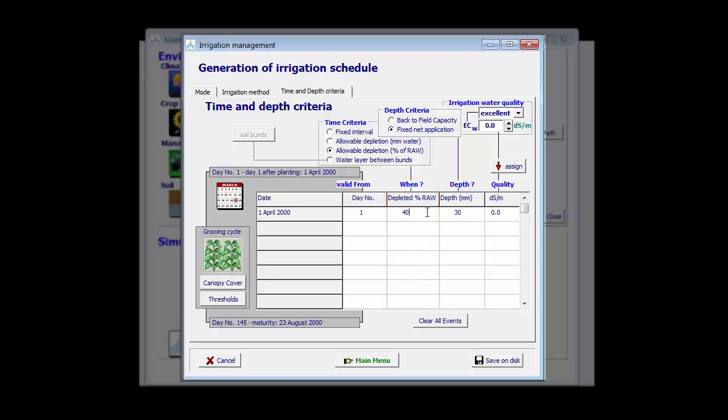This table specifies that starting from day 1, irrigation will be generated if the depletion in the root zone reaches 40% and at that moment 30 mm of water will be applied.